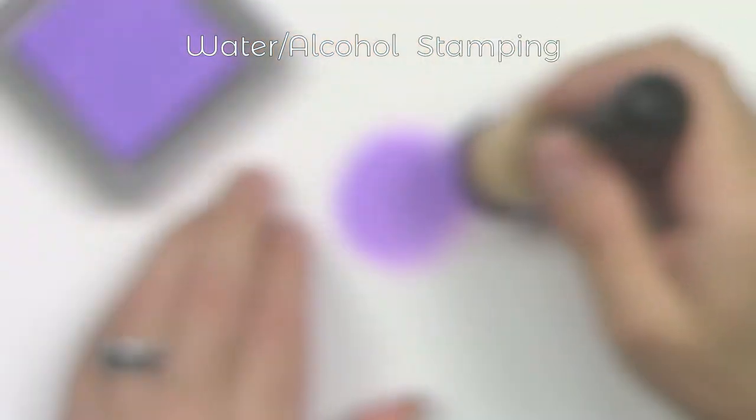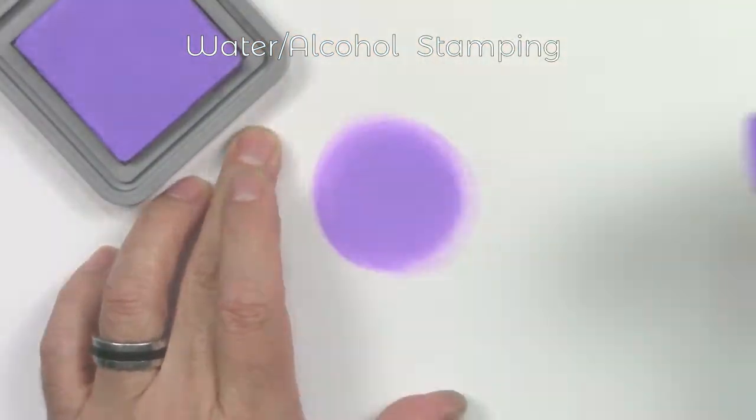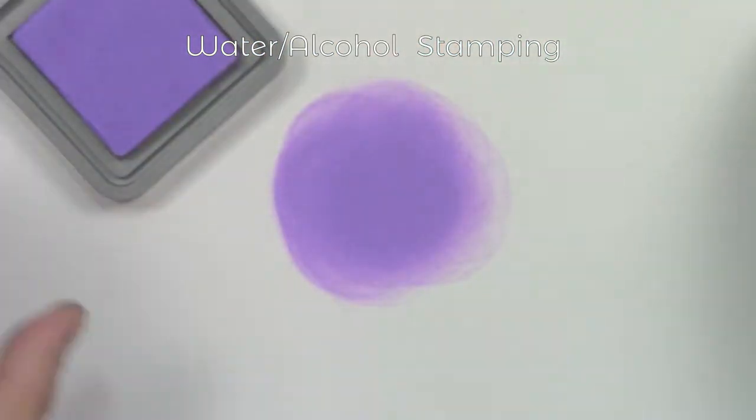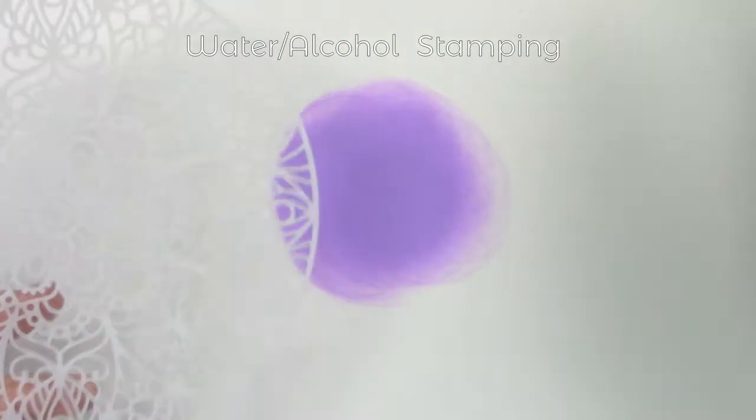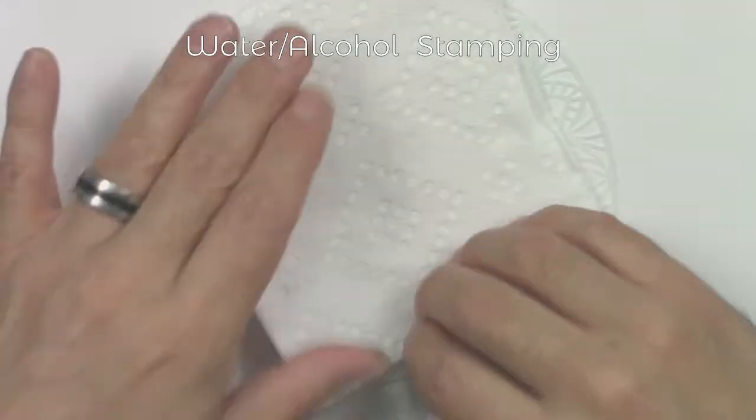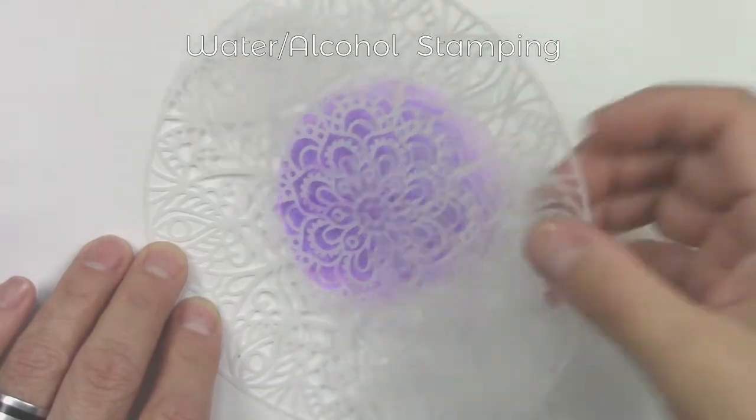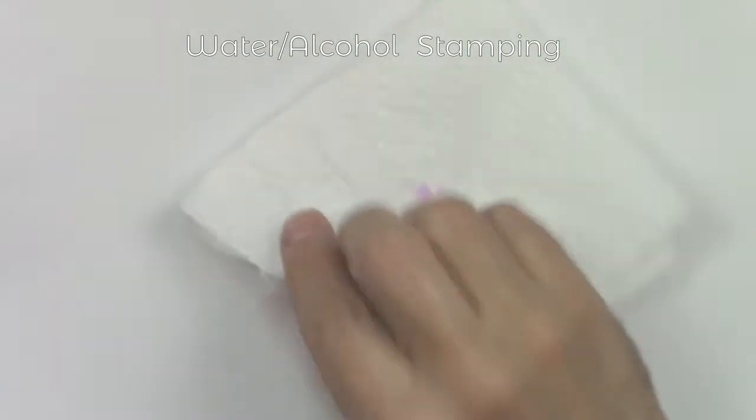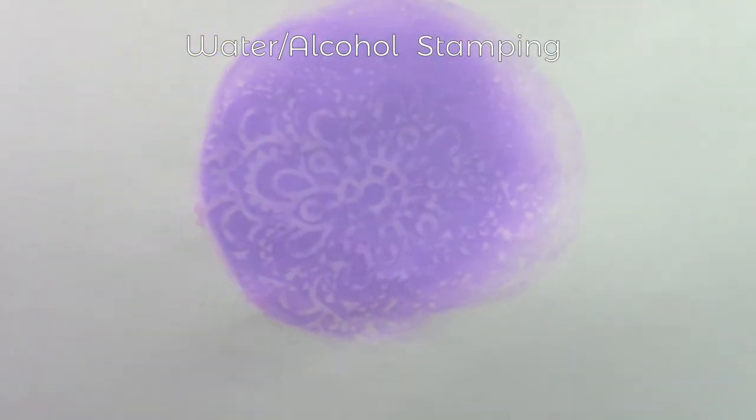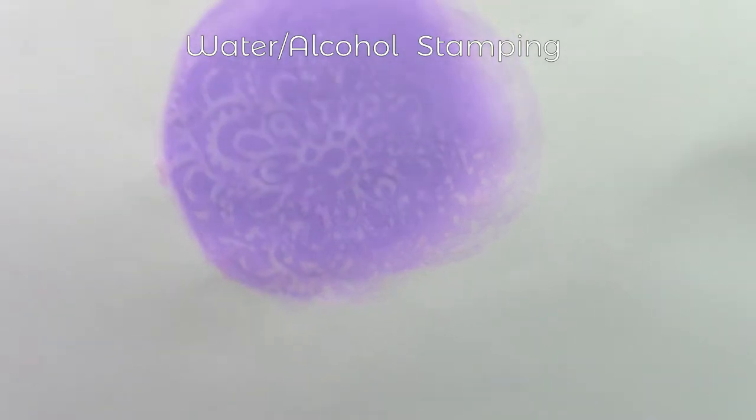For water stamping or alcohol stamping, you first apply a coat of ink on your surface. And depending on the medium that you're using, spray some water for water-based inks and alcohol for alcohol-based inks. Put your stencil on top of your surface. Leave it there for a while. And then remove it. You can dry any excess water or alcohol with a paper towel. Remember, the more you leave the stencil, the stronger the effect.